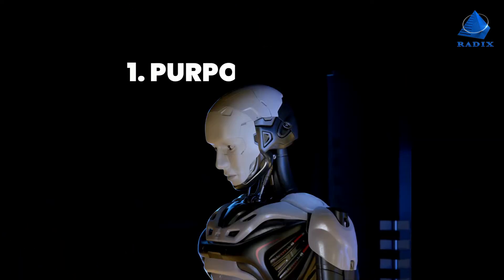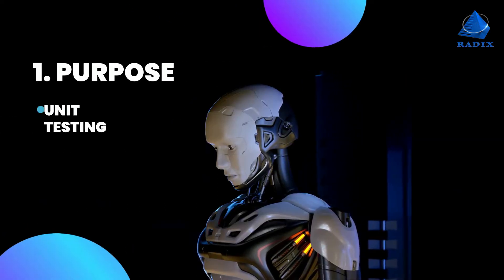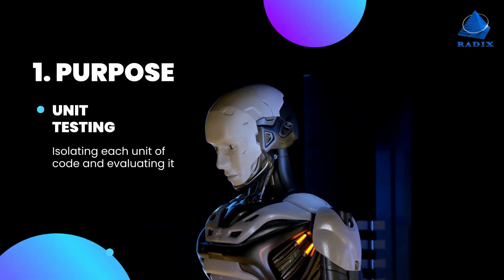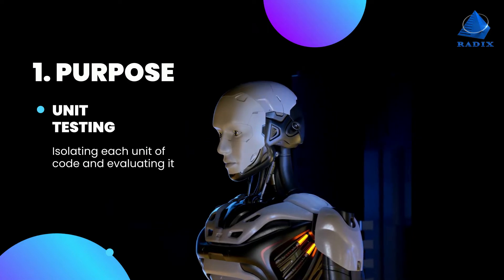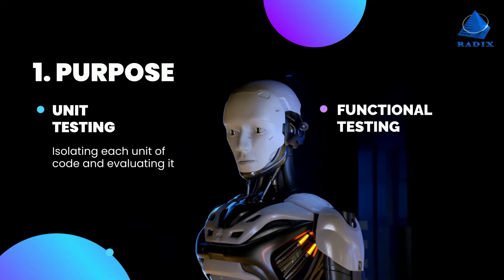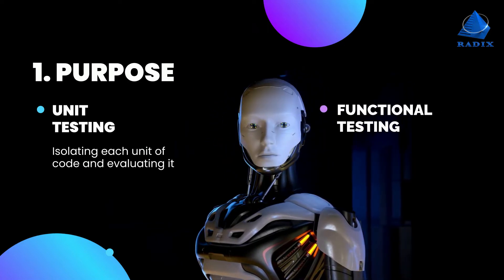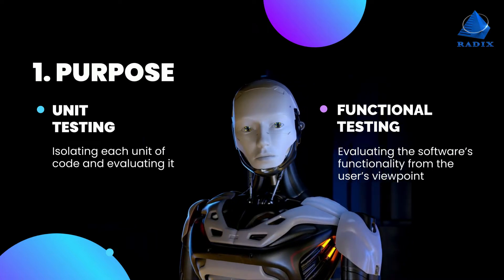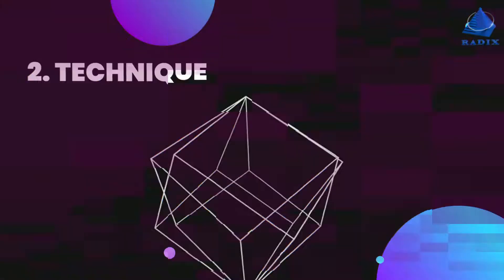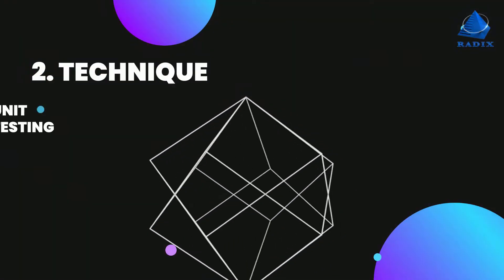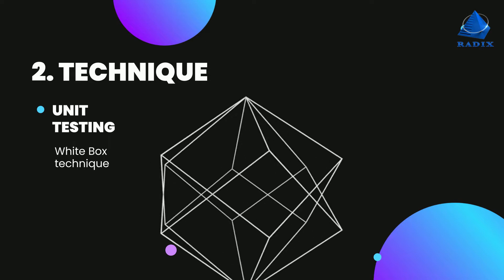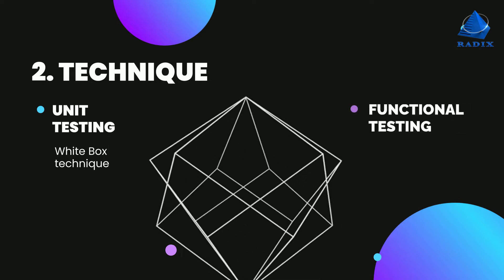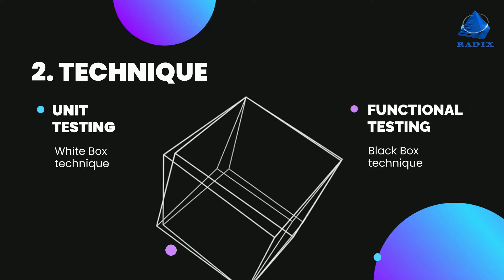1. Purpose: The purpose of unit testing is to isolate each unit of code and evaluate it. The purpose of functional testing is evaluating the software's functionality from the user's viewpoint. 2. Technique: Unit testing deploys the white box technique, while functional testing deploys a black box technique.